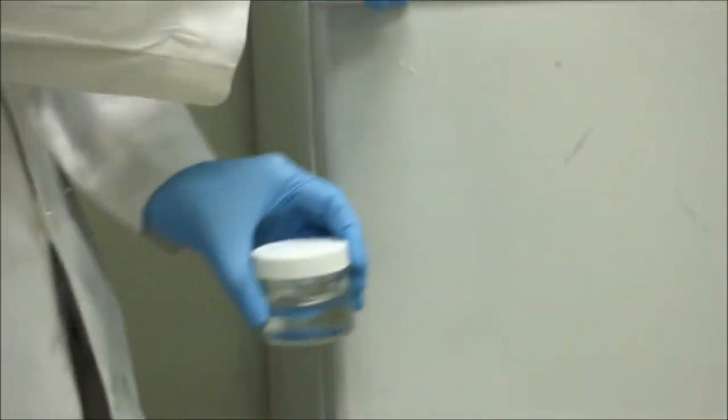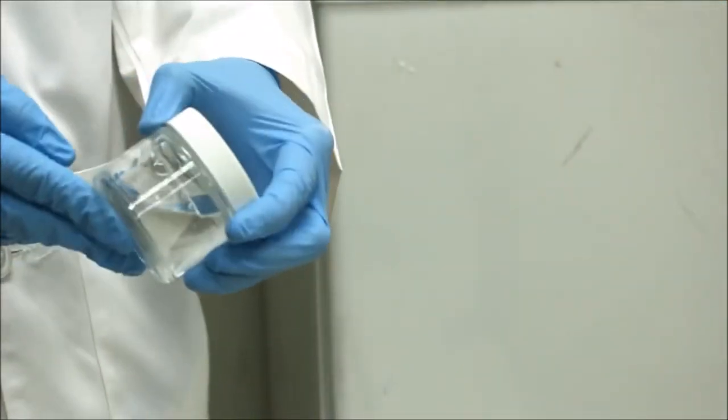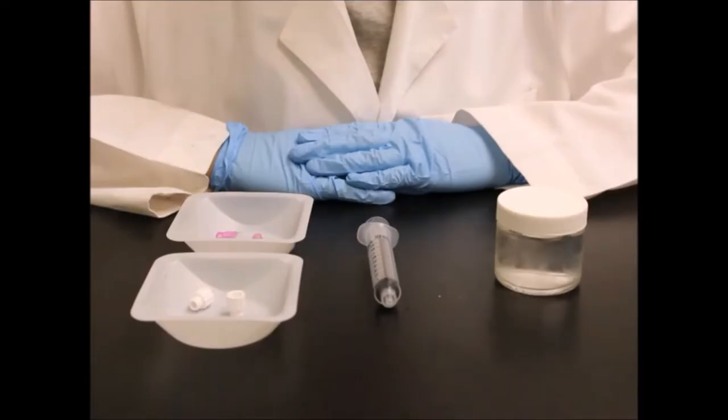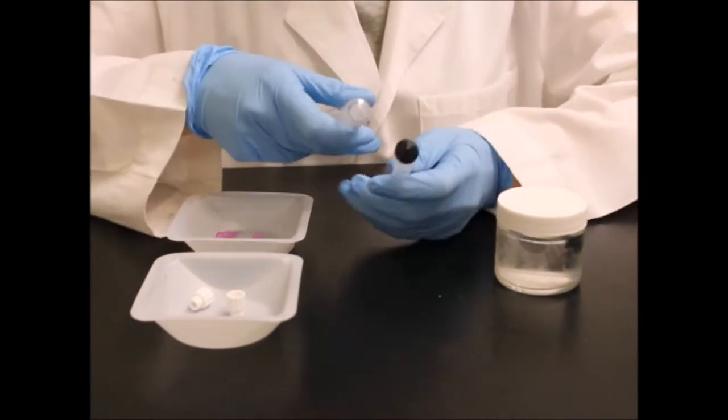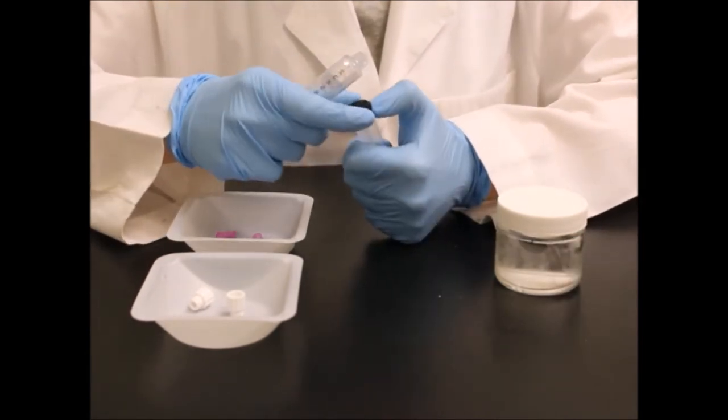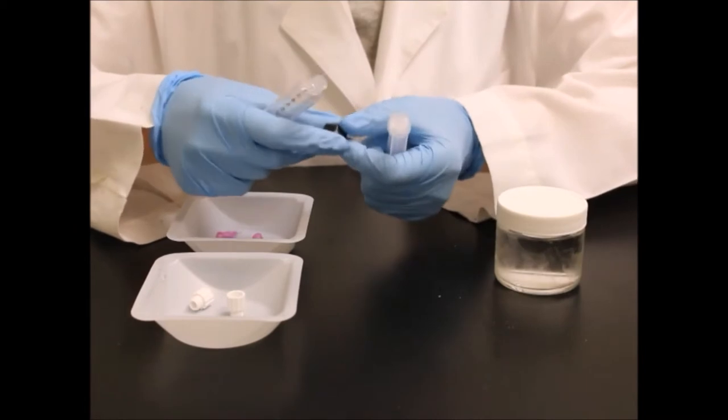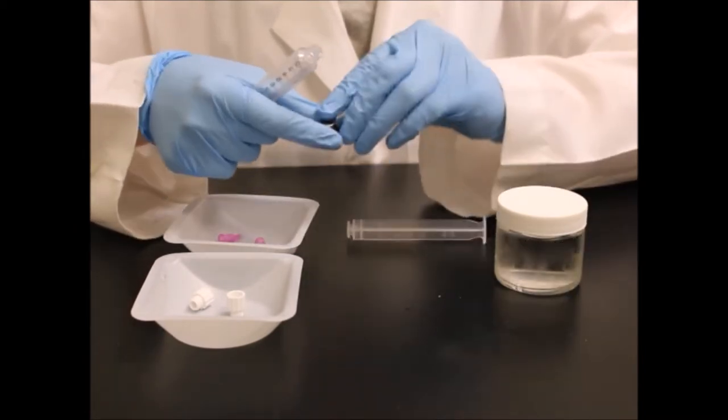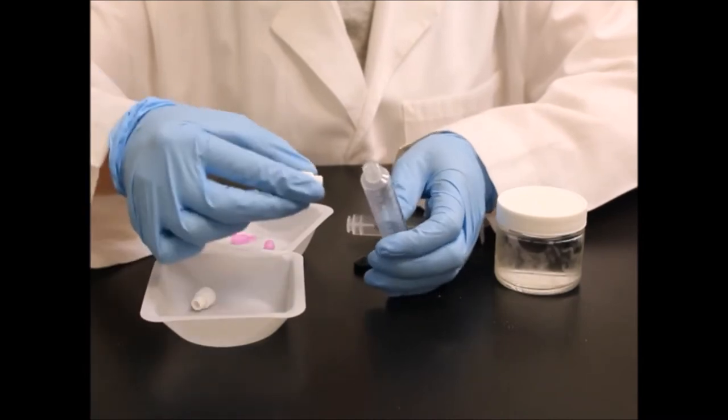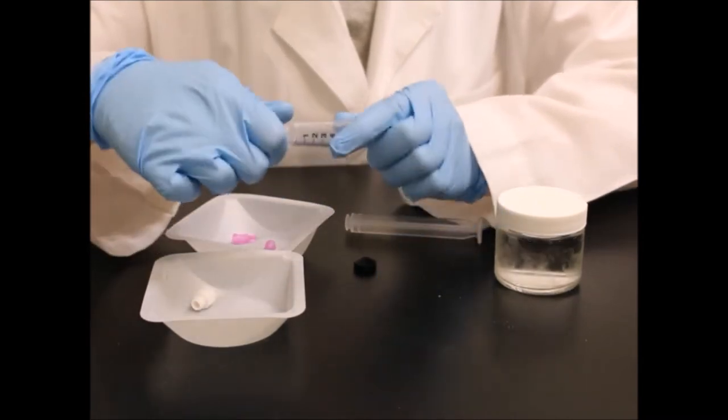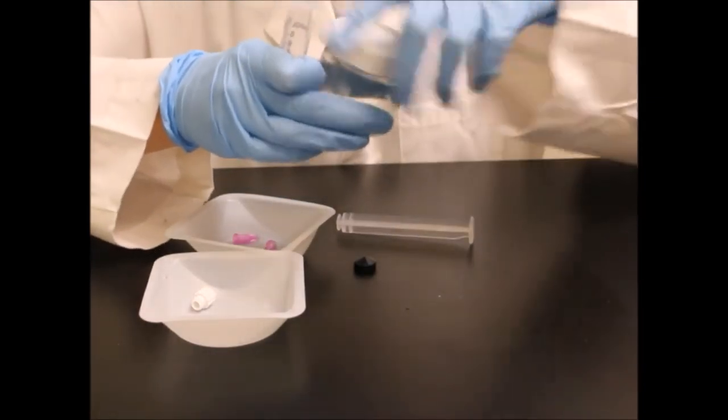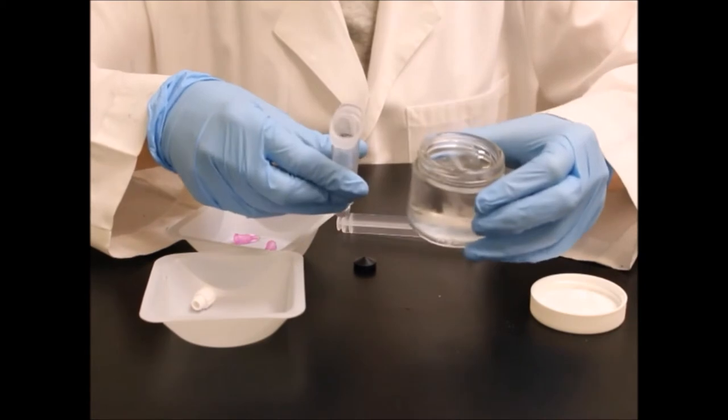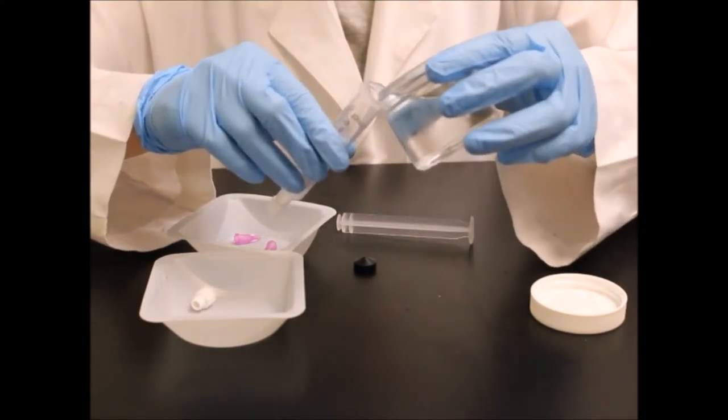First, remove Pleuronic F127 from the fridge. The material should be a liquid solution. To load Pleuronic F127, remove the plunger from the syringe and remove the black stopper from the plunger. Add a syringe cap to your syringe. Then, carefully pour or pipette Pleuronic F127 into your syringe. For this first print, we suggest loading about 2 to 3 mils.